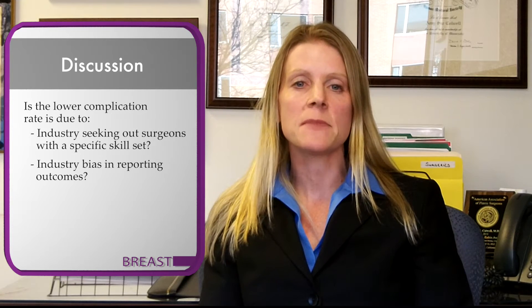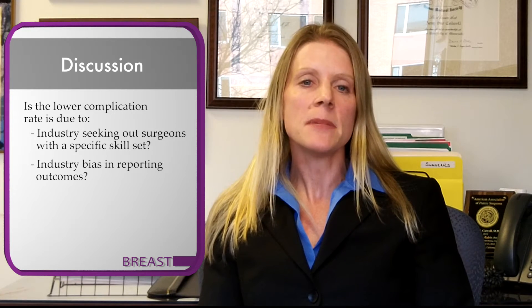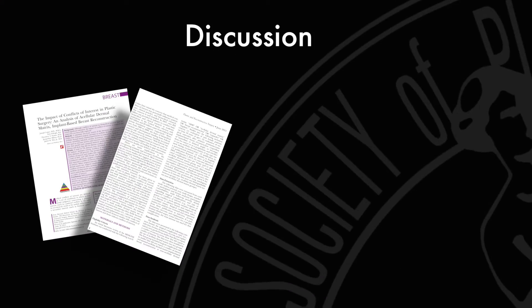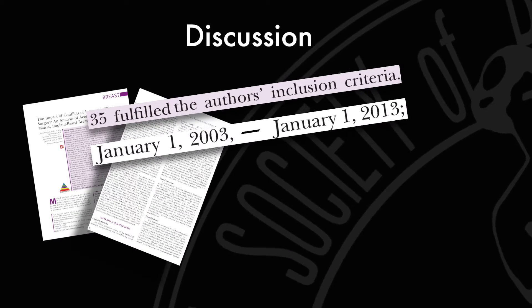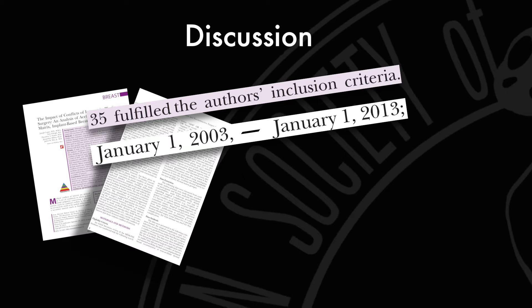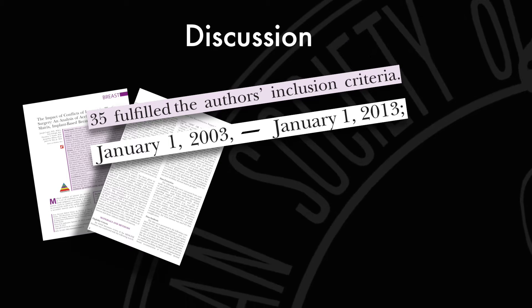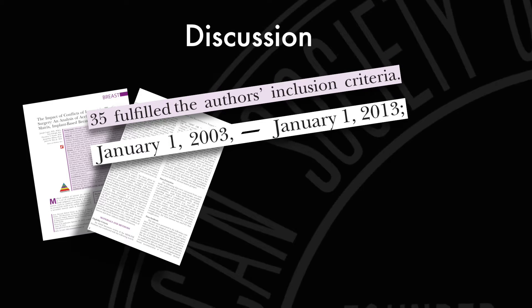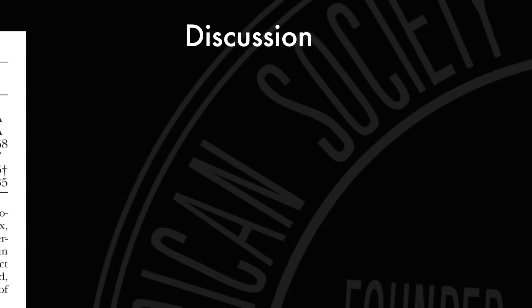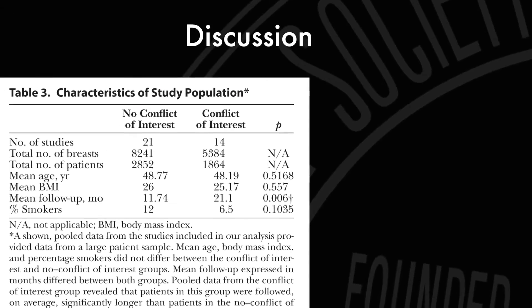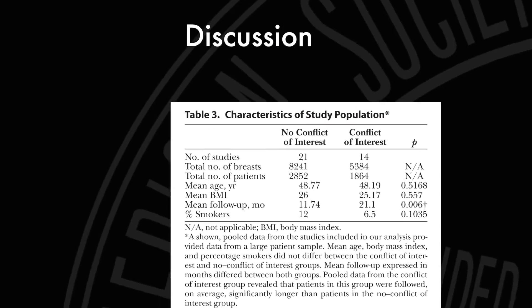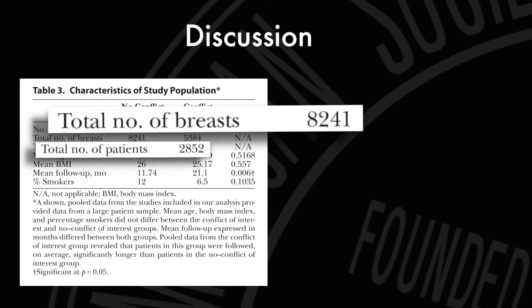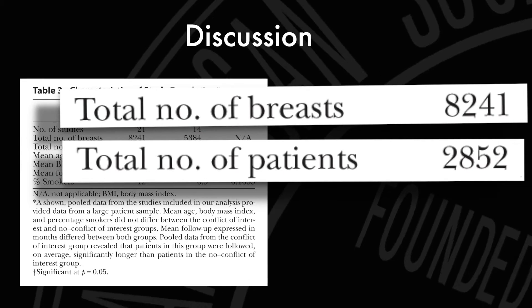The authors were up to the challenge and attempted to make this distinction, but there may be a couple of problems with the methodology which prevent us from revealing the full answer. The first thing I noticed is a very small number of studies — only 35 — and 10 years. Of the 35 studies examined, the Rolani article appears to be a duplicate as it's listed twice in their table. If you look at Table 3, the characteristics of the study population, you see that the total number of breasts is almost three times the number of patients, which I don't think is possible.